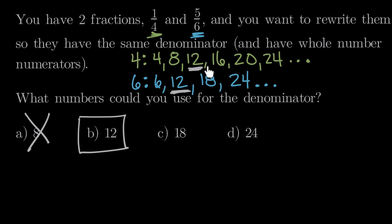18 is here on the sixths. We could split sixths into 18, because 18 is a multiple of 6. But it is not a multiple of 4. So we can rule out 18. 18 is not a common denominator.